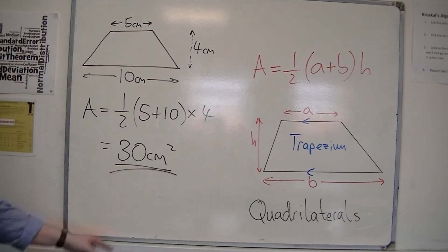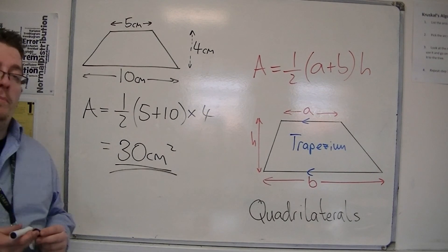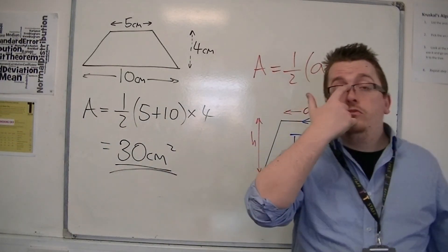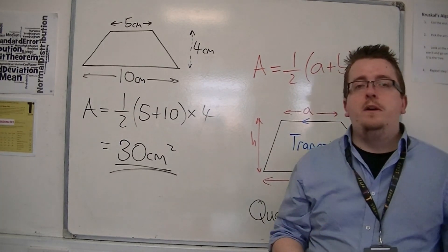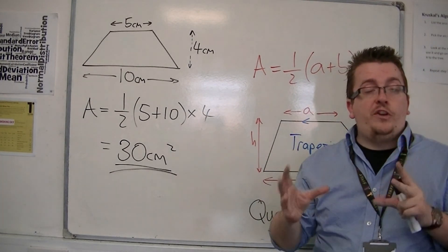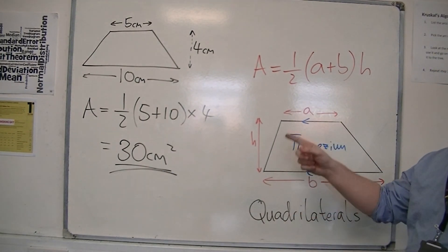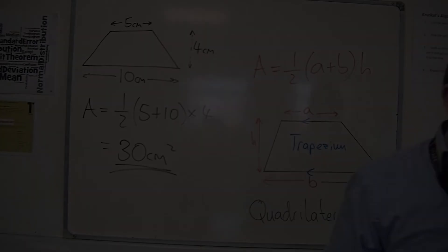And that's how you can use the formula for the area of a trapezium. But as we saw for the square, rectangle, rhombus, and parallelogram, the area is base times height. The kite's a little bit more tricky, and the trapezium uses this formula here.